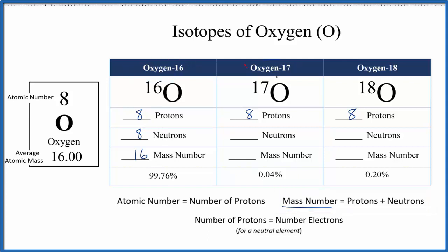For oxygen-17, we know the mass number is 17, and we know mass number equals number of protons plus neutrons. So eight plus nine, that'll give us 17. So we have nine neutrons for this oxygen-17 isotope. Oxygen-18, mass number is 18. Eight plus ten, that'll give us the mass number there. So we have ten neutrons for oxygen-18.